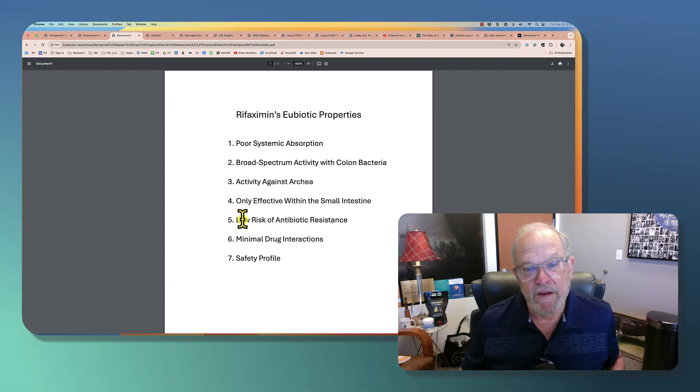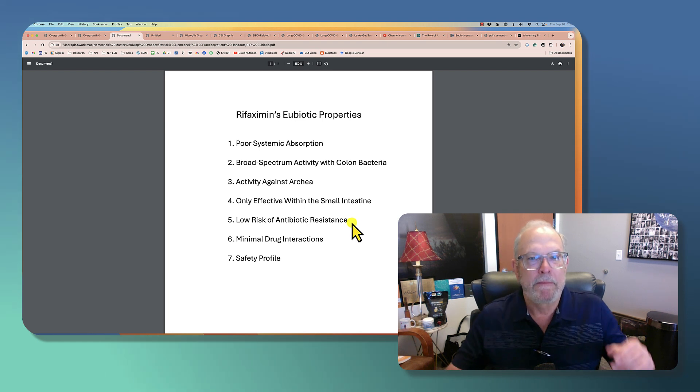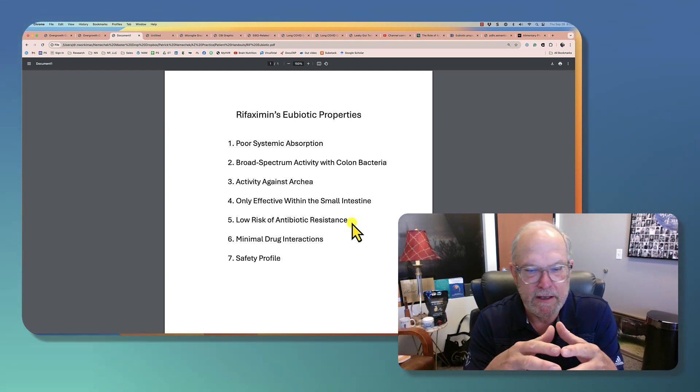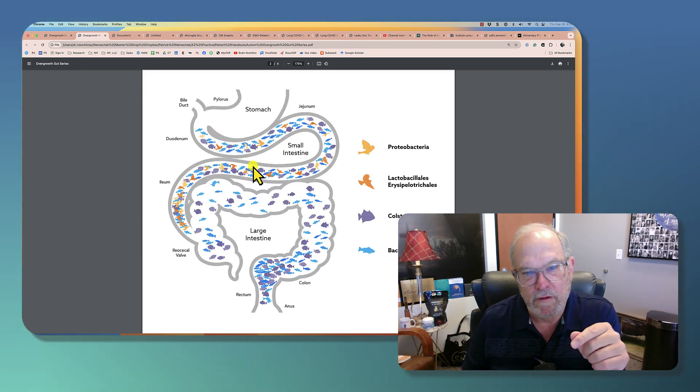And there's very little risk of resistance. Almost none. Now how do we know this? Well, they use Rifaximin when you get this condition where you have overgrowth,